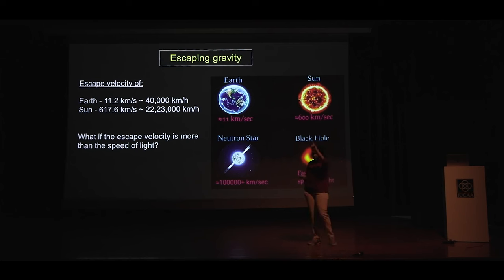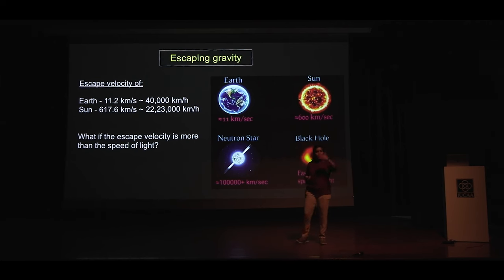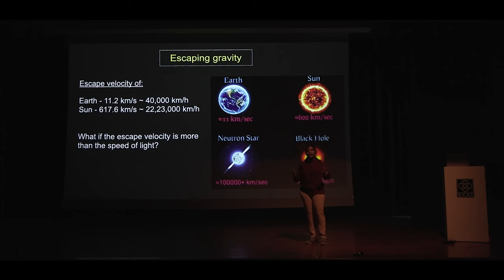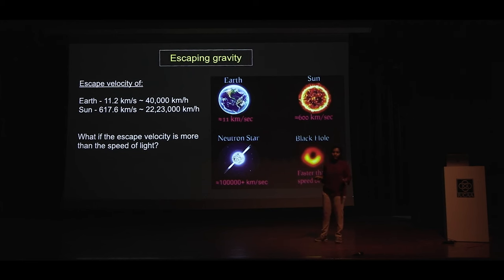We see all the stars in the sky because light escapes from them and reaches our eyes or our telescope. But for this kind of body, it will not emit any light. It will not allow anything to escape it. So it will be completely black. And this is a black hole.